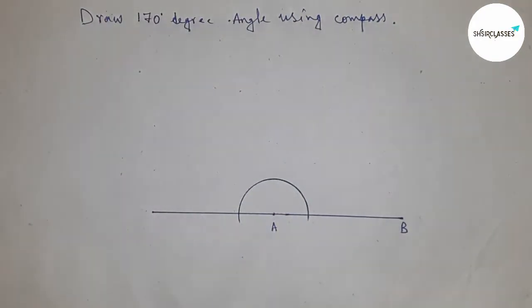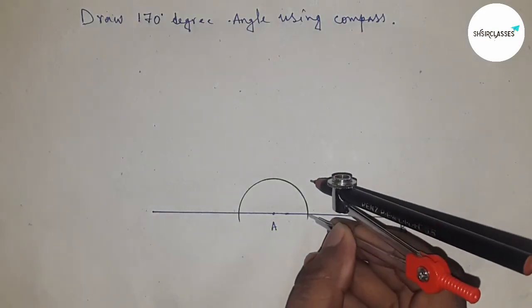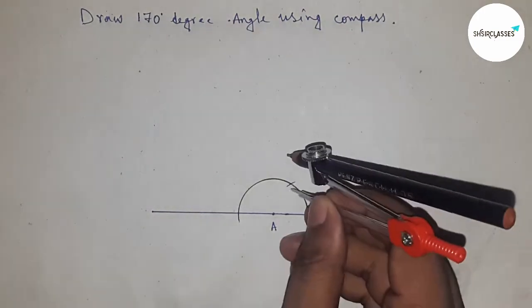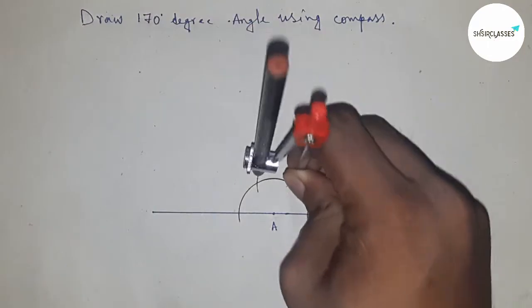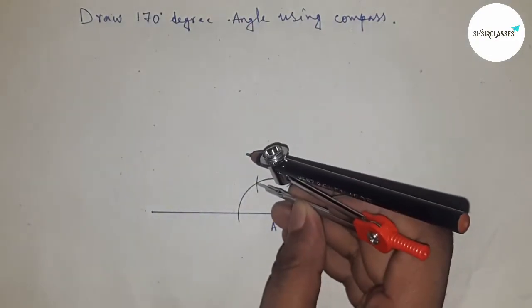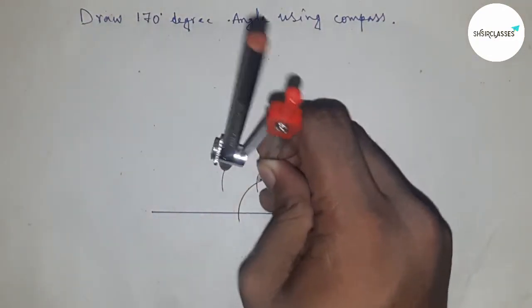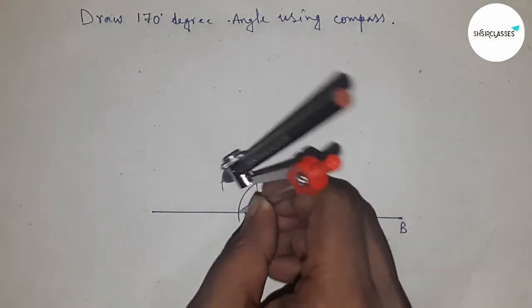First, drawing a semicircle on point A. Next, with the same length, cut the semicircle by this way. Next, putting the compass here with the same length and drawing arc here, and putting the compass here and drawing a arc and cut the line by this way.